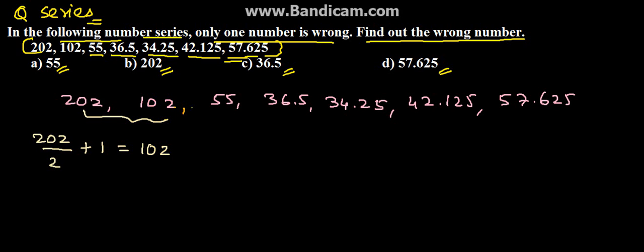Similarly, if we divide 102 by 2, we will get 51. And the difference here is 4, that means 2 square. So this is 1 square. This is 2 square, that is 55.